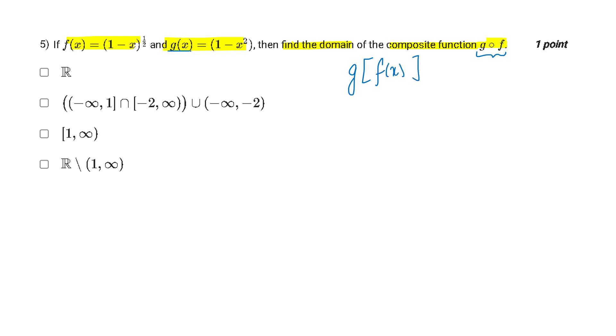So here we have g(x) and I have to get g of f(x). So basically jahaan pe x thana g ke function mein wahaan mujhe f(x) replace kar dena. So 1 minus x square tha mera g(x). But yahaan x ke jaga mujhe kya dal dena hai, f(x) dal dena hai. So it will be 1 minus x raised to the power half.